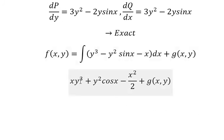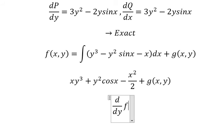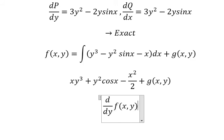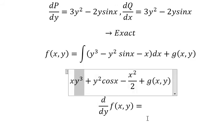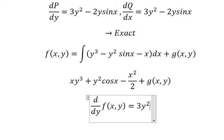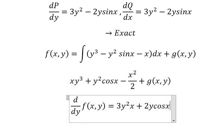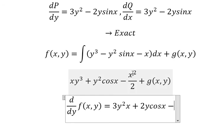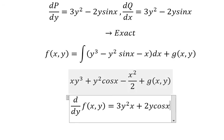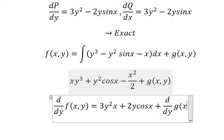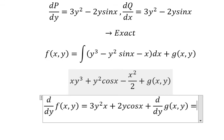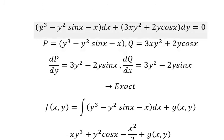Next, we take the first derivative of f(x,y) with respect to y on both sides. We get three y squared and two y from the respective terms. The term without y gives zero. We know that everything here equals Q.